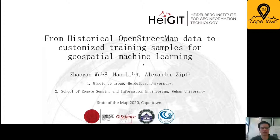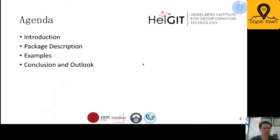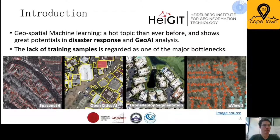Hello everyone, my name is Chow Yen Wu, and I am a PhD student in Wuhan University, China. From last year, I came to Heidelberg University and joined the Geoscience group as an exchange PhD student. Today my topic is from historical OpenStreetMap data to customize the training samples for geospatial machine learning. The topic will be given by me and Hao Li, a PhD student in the GI Science group at Heidelberg University. The topic will be divided into four parts: the first part introduction and the second part package description will be given by me, and the rest will be given by Hao Li. Let's get started.